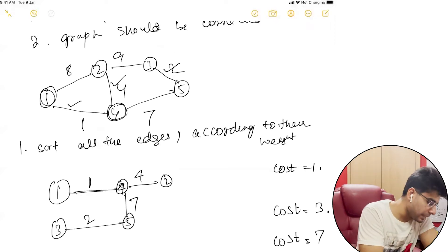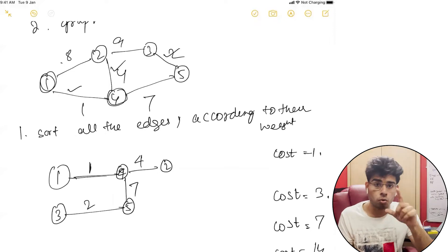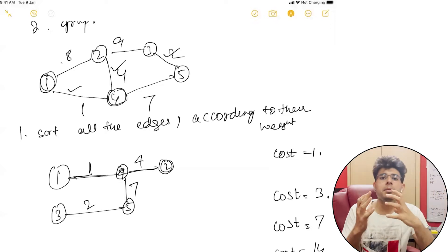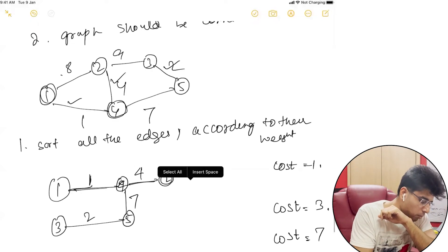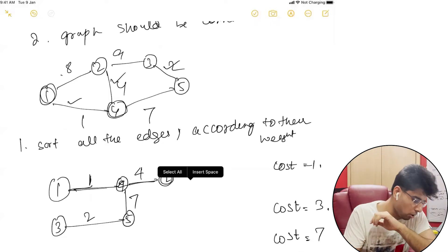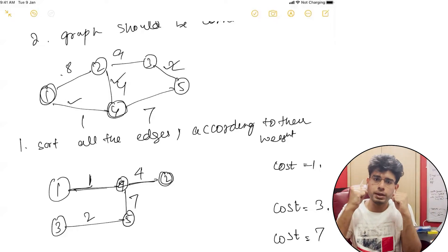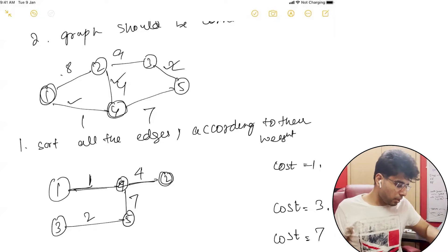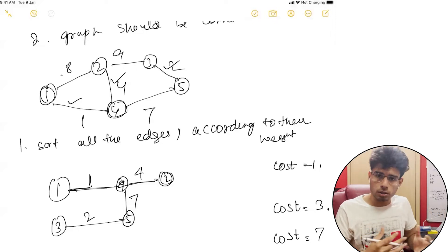Now, what is the next minimum weighted edge? That is 8. Shall we add 8? No, we won't — because we see that nodes 1 and 2 are already in the same connected component. Previously, we added 1 and 4 because they were not in the same connected component, and we added 3 and 5 because they were not in the same connected component.